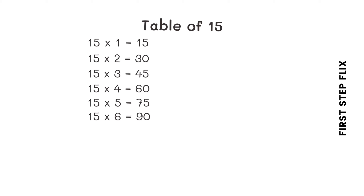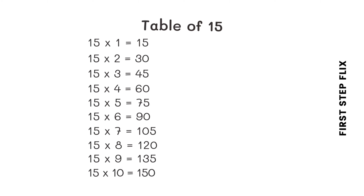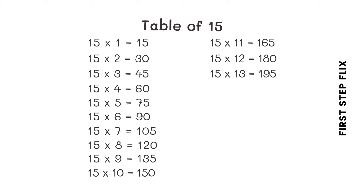15 sevens are 105. 15 eights are 120. 15 nines are 135. 15 tens are 150. 15 elevens are 165. 15 twelves are 180. 15 thirteens are 195. 15 fourteens are 210.